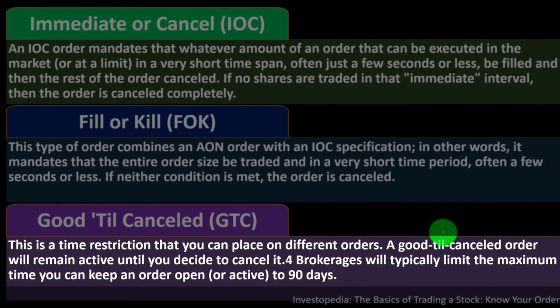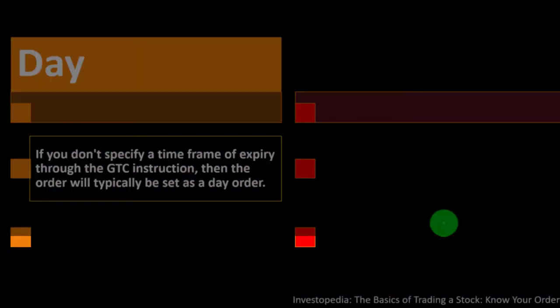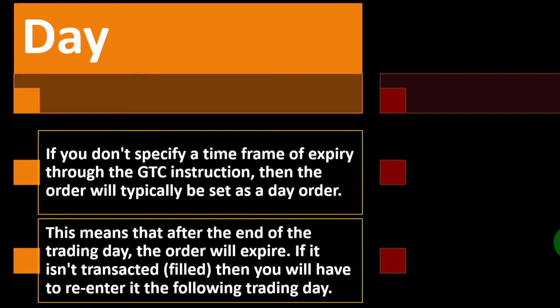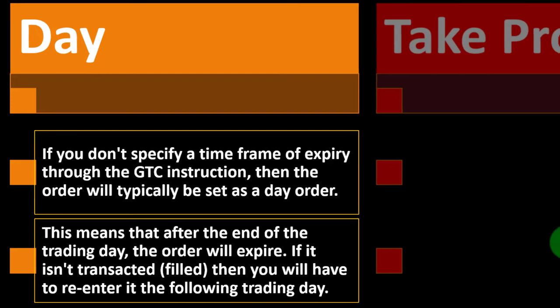A good till cancel (GTC) order is a time restriction you can place on different orders — it will remain active until you decide to cancel it. Brokerages typically limit the maximum time an order can remain active to 90 days. If you don't specify a time frame through GTC instructions, the order is typically set as a day order, meaning it expires at the end of the trading day if not filled, and must be re-entered the following day.